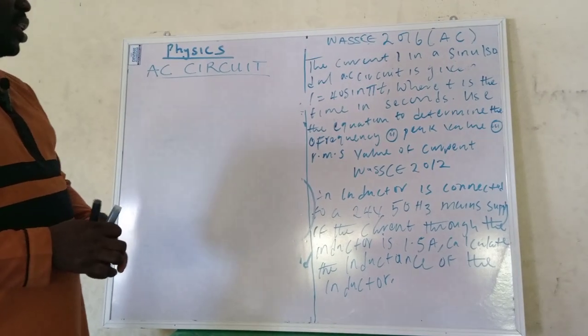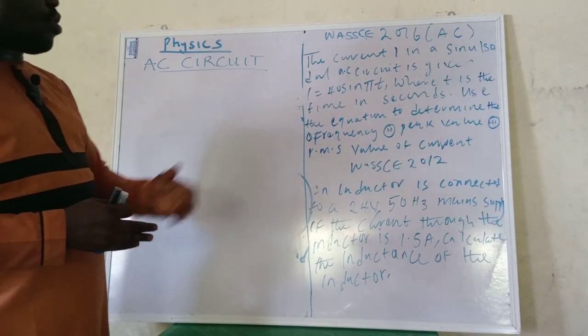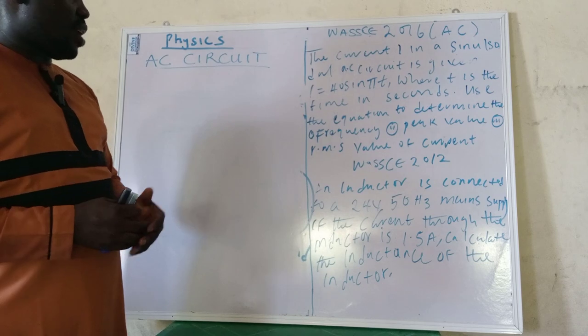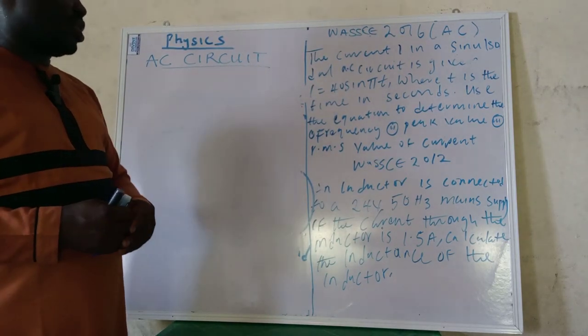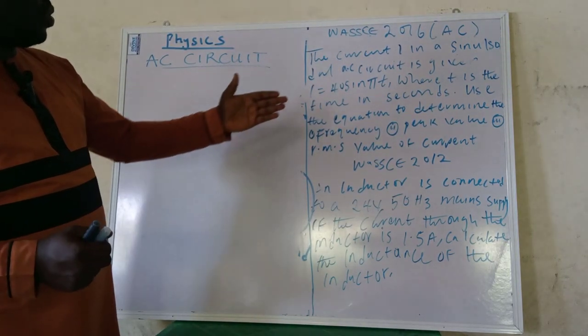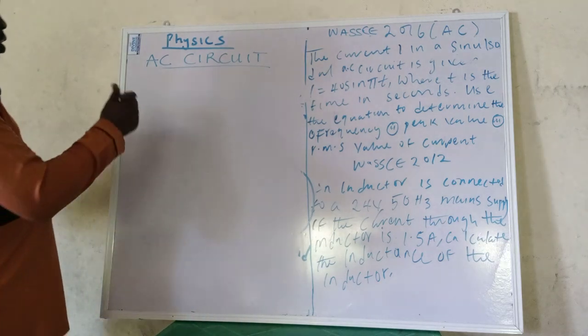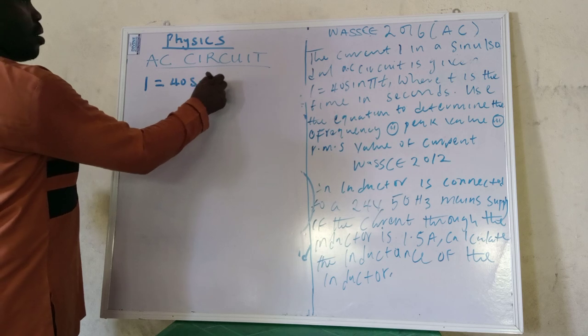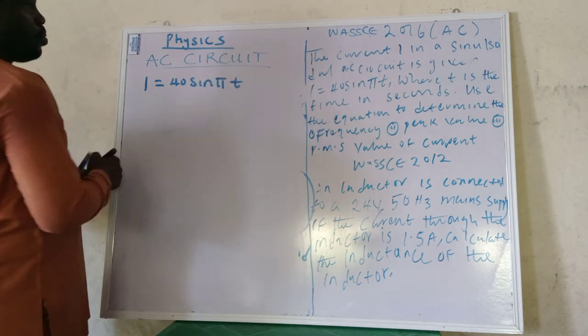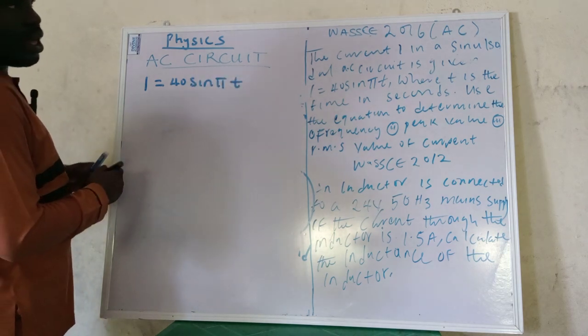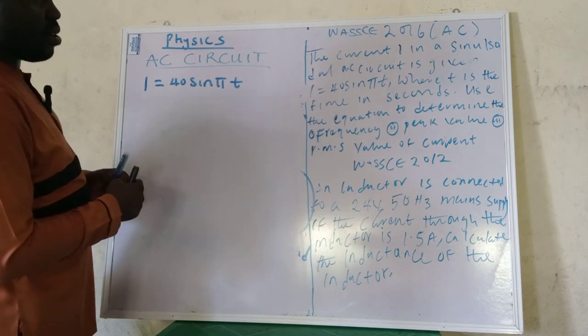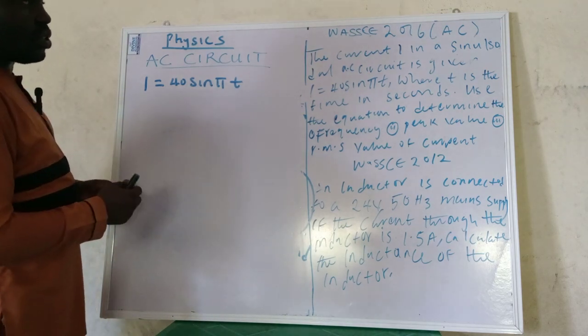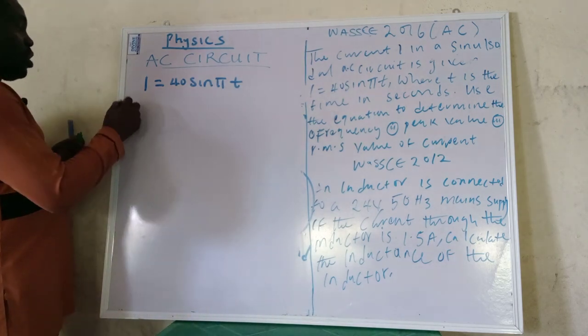Now look at the question. The current I in a sinusoidal AC circuit is given as I = 40sin(Ct), where C is time in seconds, and we are told to use the equation to determine the following.